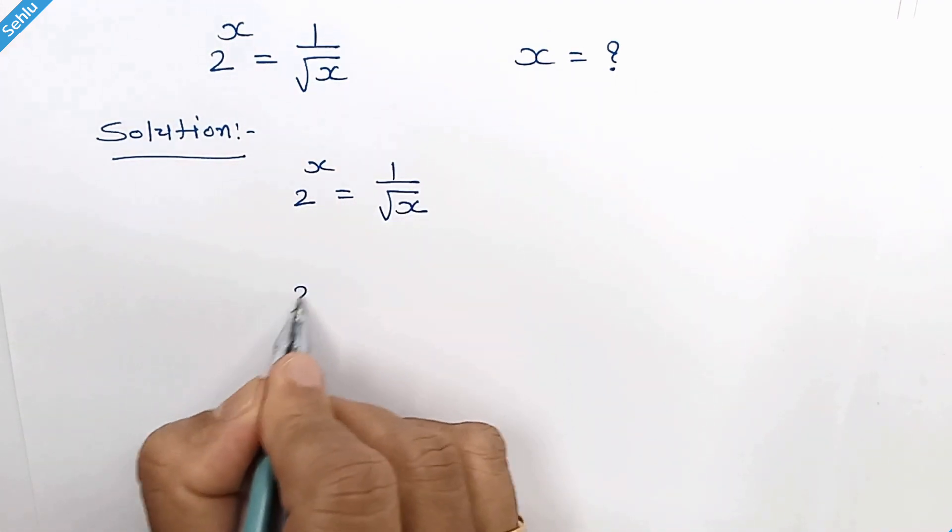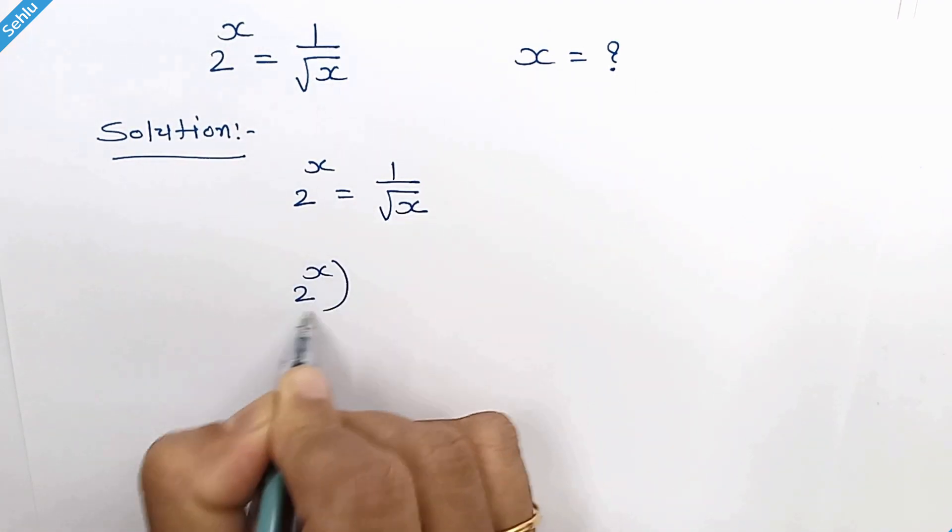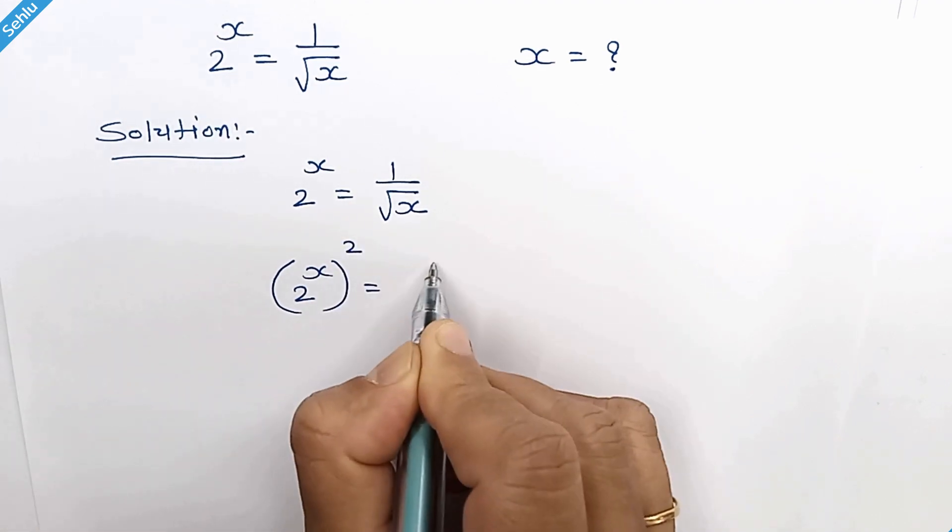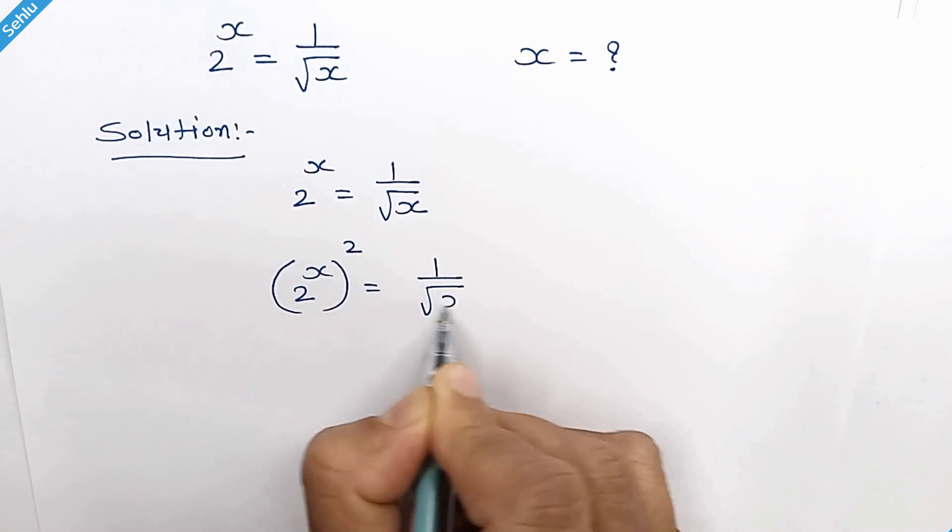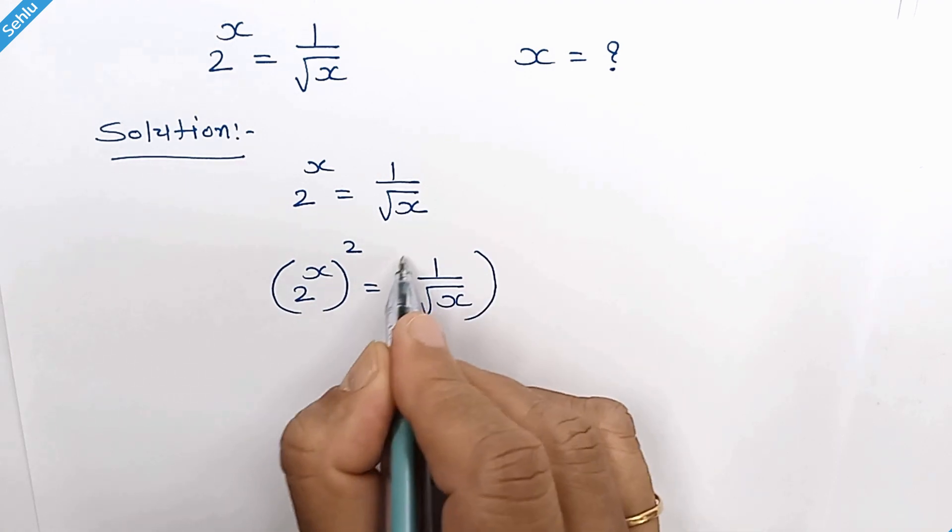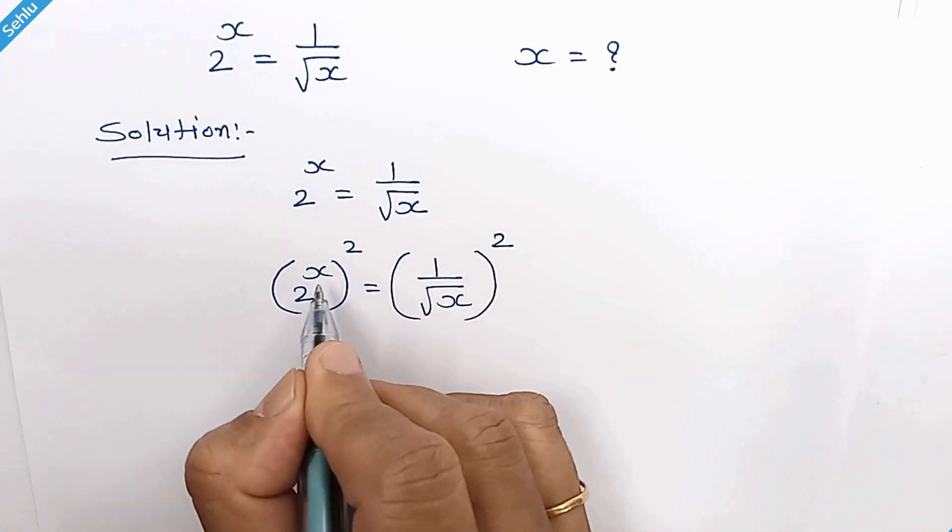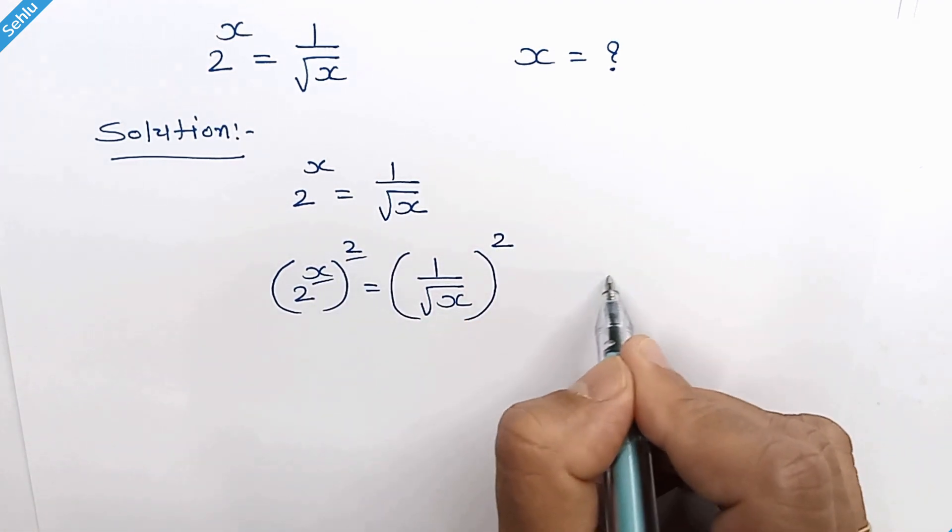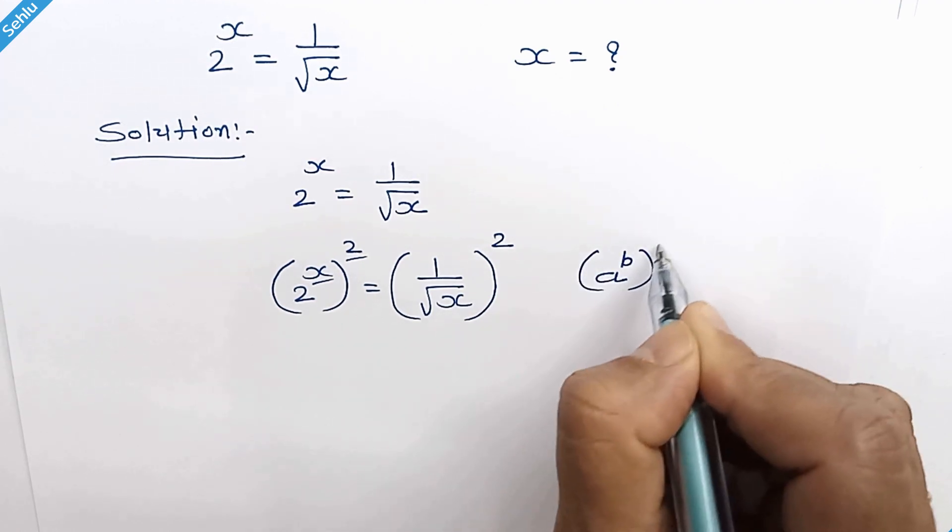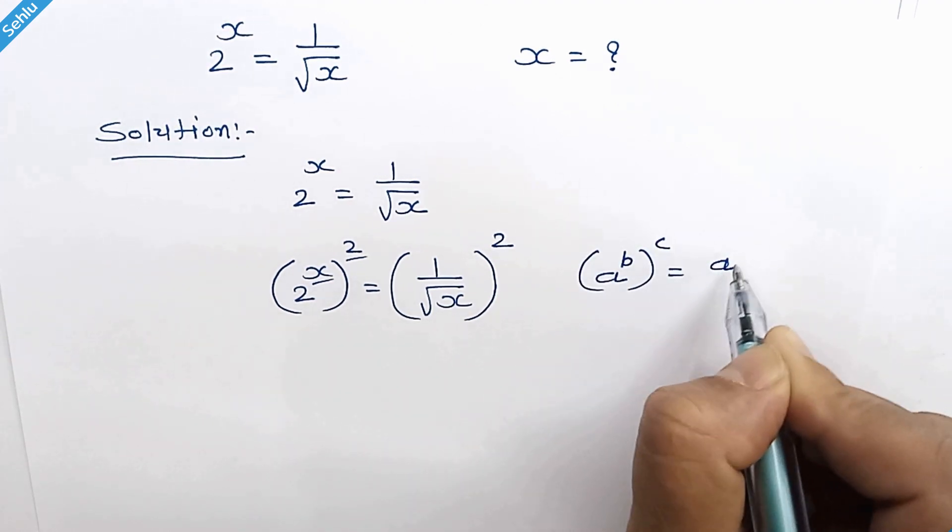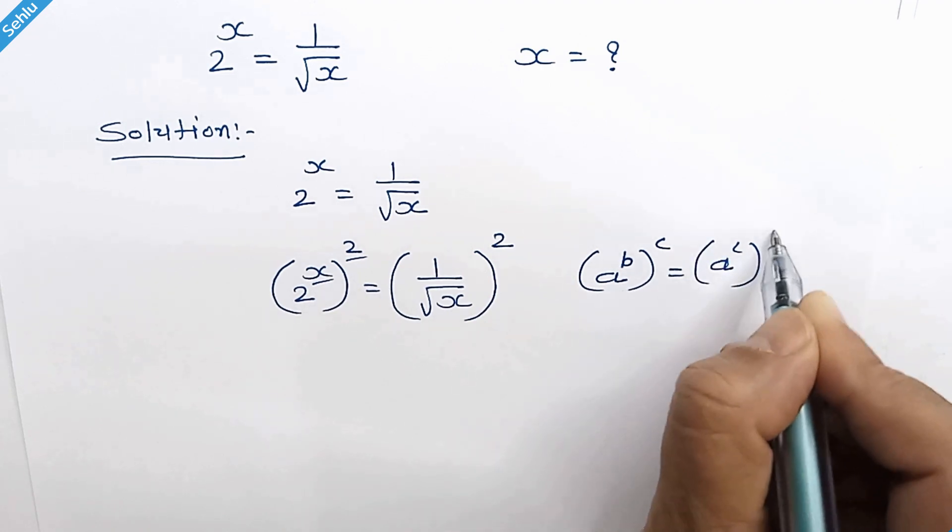First we will square both the sides. Now we can flip this too because when we have a to the power b whole to the power c, then it can be a to the power c whole to the power b.